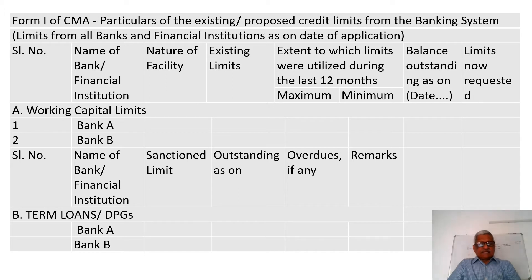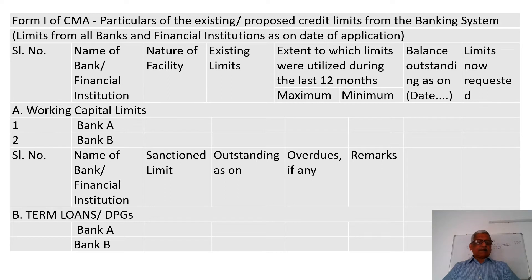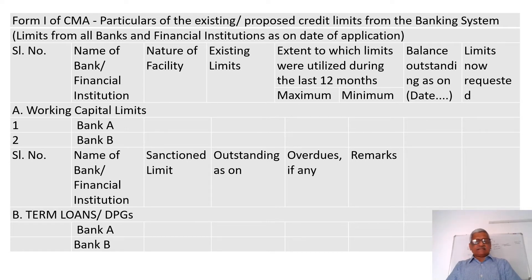The same figures are for Bank A and Bank B. Similarly, for the term loan, it shows the name of the bank or financial institution from where the term loan is availed, the sanction limit, outstanding as on date, if there are any overdue, the details, and the remarks. Let us now move on to Form No. 2.